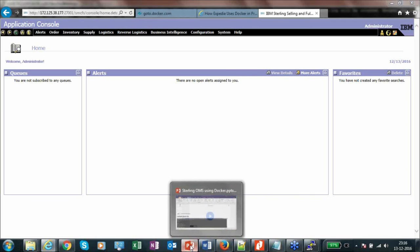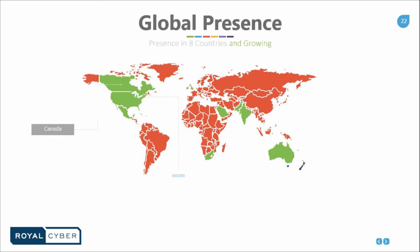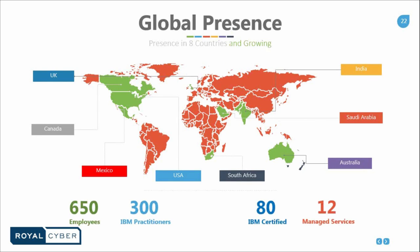Thank you, Mr. Abhishek, for the presentation. Since we're live and interactive, after we talk a little about our global presence, I would like all attendees with questions to chat them to us in the window on the right side of the pane. We're going to unmute everyone for the question and answer session. RoyalCyber is located all over the globe — we have 650 employees, 300 IBM practitioners, 80 IBM certified technicians, and 12 managed services. Our global presence can be found in the UK, Canada, Mexico, USA, South Africa, Australia, Saudi Arabia, and India.